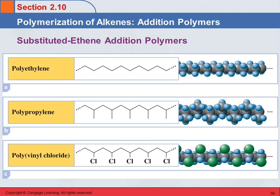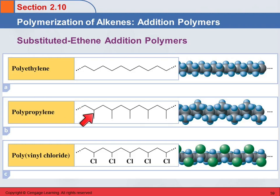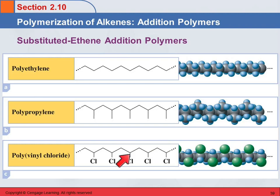We also make addition polymers from substituted ethenes. Here's polyethylene — its line angle formula is just a zigzag line, and here's the space-filling model. Polypropylene is a substituted ethylene with a methyl group, so we see the methyl groups showing up, making it bulkier. Polyvinyl chloride is where we take vinyl chloride and string those together — that's PVC. If you've ever done sprinkler work, those white PVC pipes are made out of polyvinyl chloride.